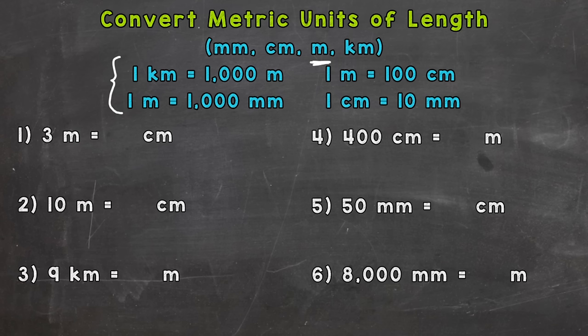Let's get into some conversions. Number one: three meters equals how many centimeters? Well, one meter is a hundred centimeters, so we have three groups of one hundred. Whenever we go from meters to centimeters, we multiply by a hundred. So three meters equals three hundred centimeters.